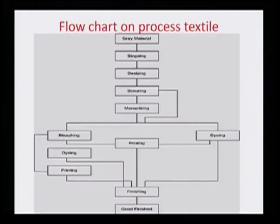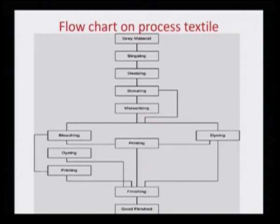A grey material follows this typical flow chart: it goes through singeing, desizing, scouring, and mercerizing, then through bleaching, and then to dyeing or printing, and finally to finishing and finished goods. There are several steps which need to be understood clearly as to their role.